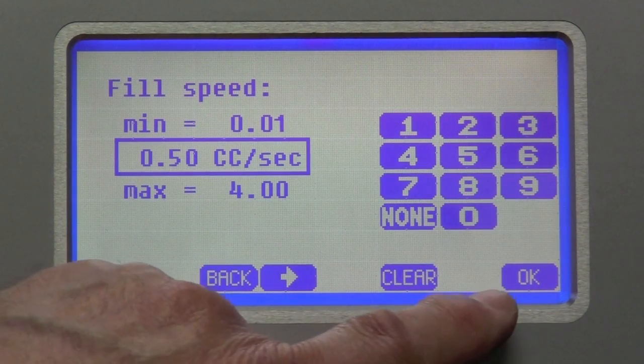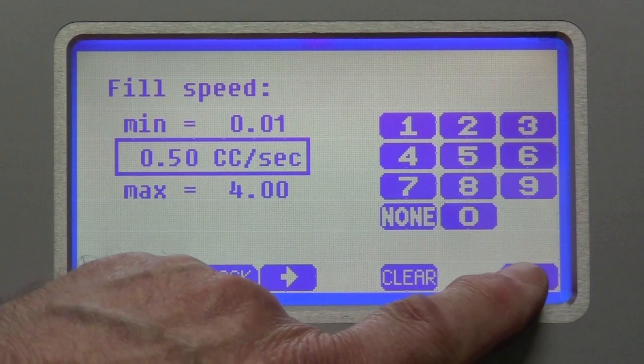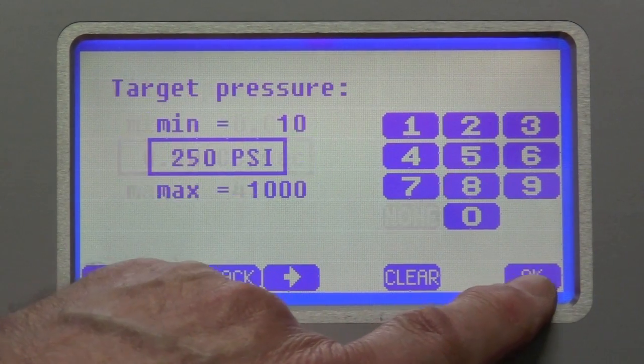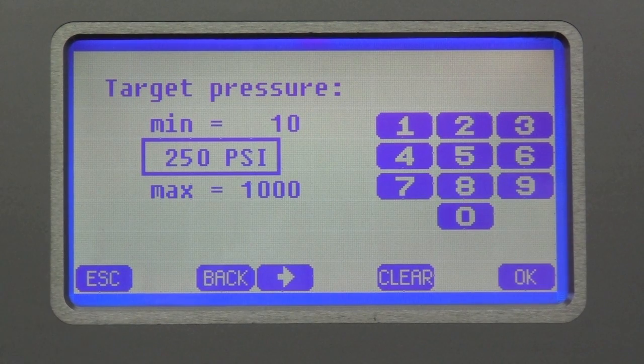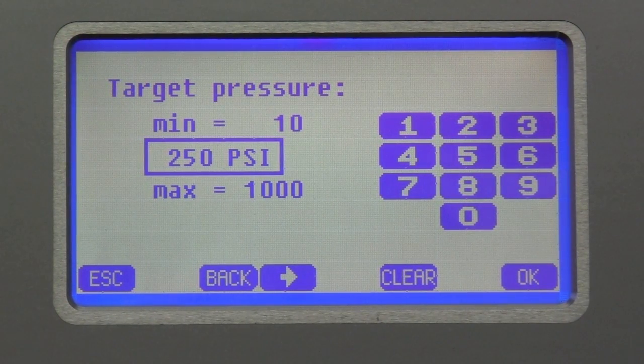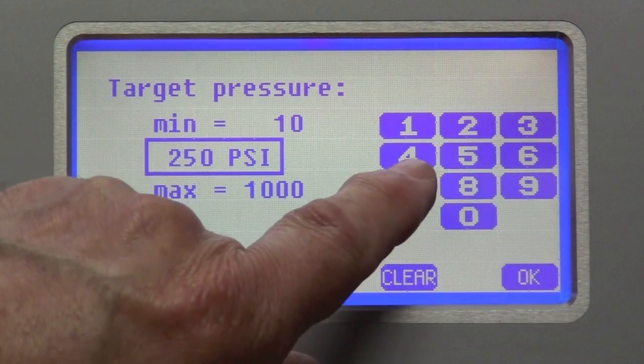Fill, this is where the product is filled prior to the beginning of the test. And you set the fill rate. Here the target pressure. In this case, we could set it as high as the limit of the machine. In this case, it's a thousand psi. I'm going to set it for 750.